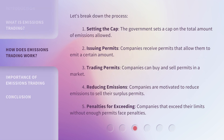Let's break down the process. 1. Setting the cap: the government sets a cap on the total amount of emissions allowed. 2. Issuing permits: companies receive permits that allow them to emit a certain amount. 3. Trading permits: companies can buy and sell permits in a market.